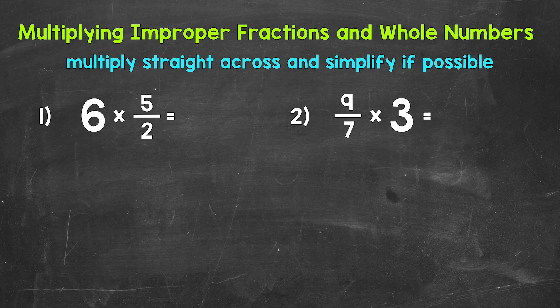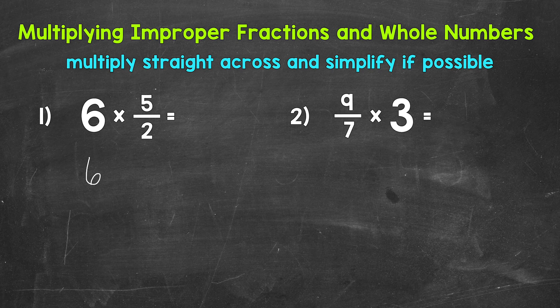Let's jump into our examples starting with number 1 where we have 6 times 5 halves. We need to multiply straight across and simplify if possible. Since we need to multiply straight across, we need to rewrite the whole number in fractional form. That way we have a numerator and denominator and we can multiply straight across. So let's rewrite that whole number 6 in fractional form by putting it over 1.